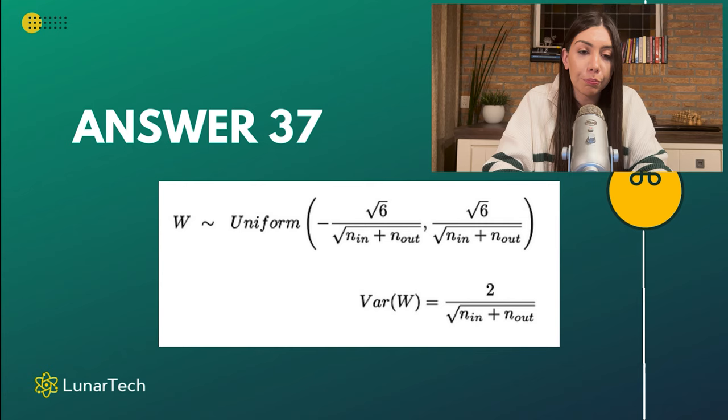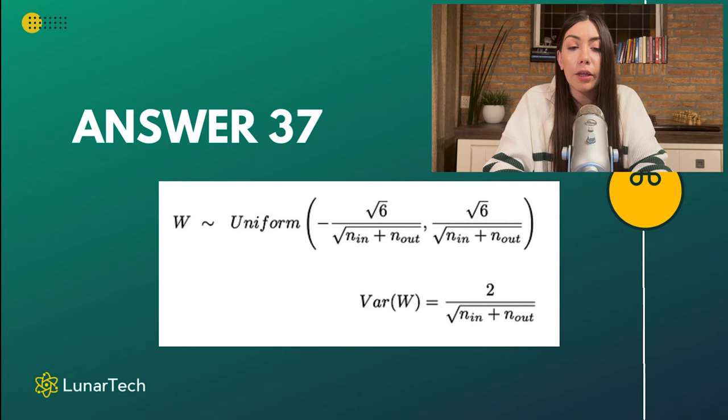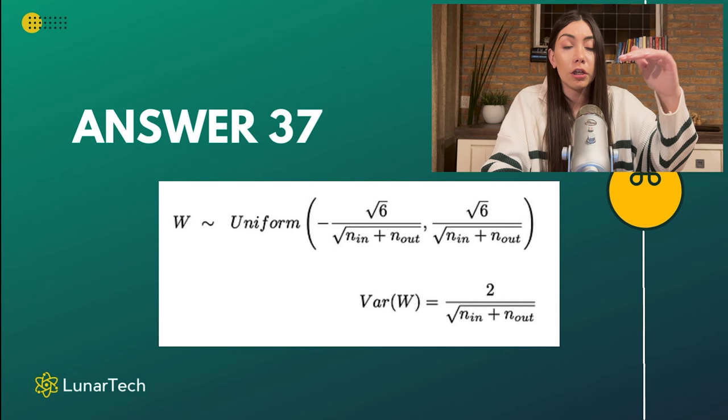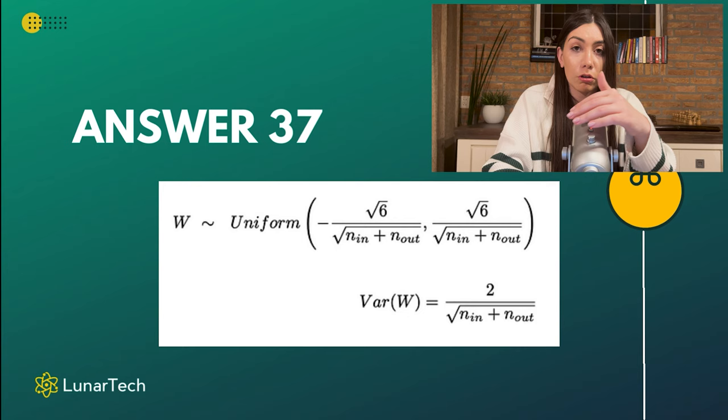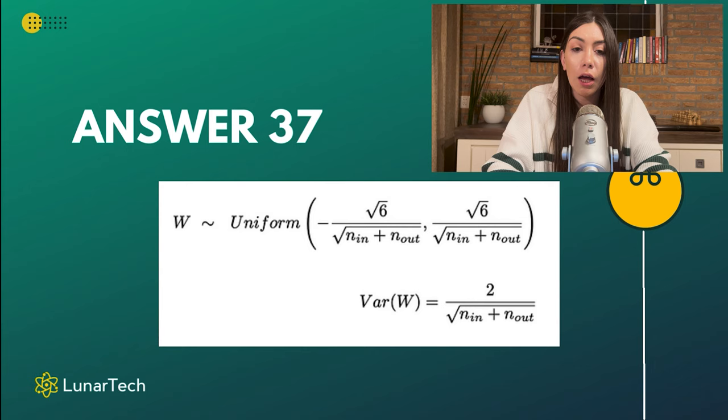The way it works is that it looks at n_in, which is simply the number of neurons as inputs going into that layer, and n_out, which is the number of neurons at the output of that layer — because in each layer we have neurons that come in and neurons that come out. These n_in and n_out values are used to define the distribution of the weights.